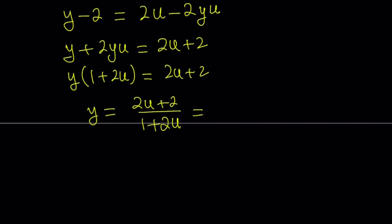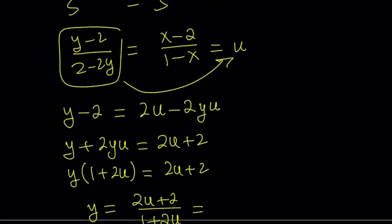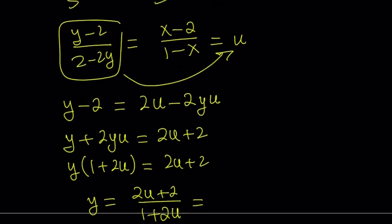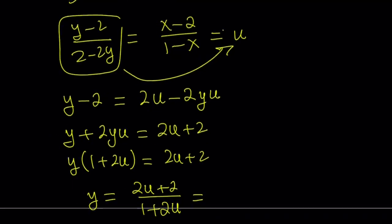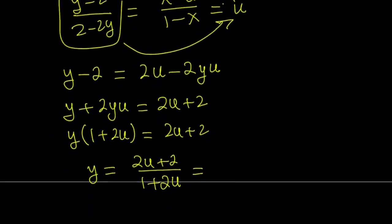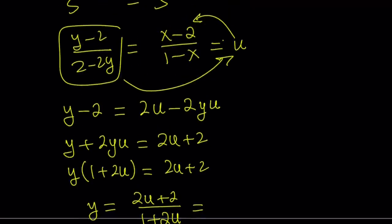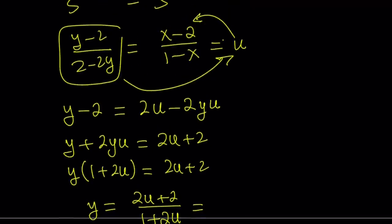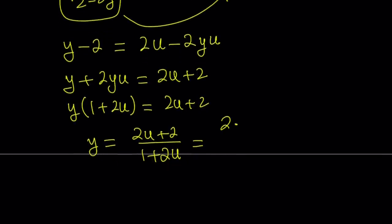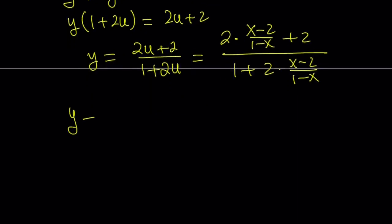Here we're going to replace u with what it is. But this time we're going to use the x value. Because obviously we want to find y in terms of x. So let's go ahead and replace u with x minus 2 over 1 minus x. 2 times x minus 2 over 1 minus x plus 2 divided by 1 plus 2 times the same thing. And now we're going to simplify this and now we'll get our answer.